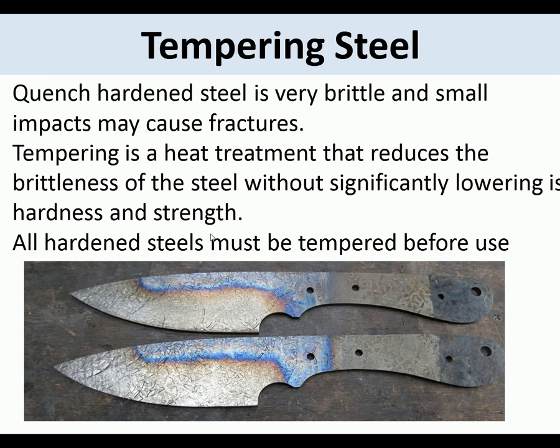Tempering steel: once steel has been quench-hardened it is very brittle, and small impacts may cause fractures. Tempering is a heat treatment that reduces the brittleness of the steel without significantly lowering its hardness and strength. All hardened steels must be tempered before use. Here we can see tempered knife blades.